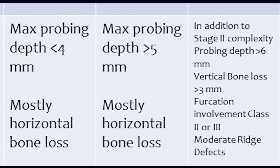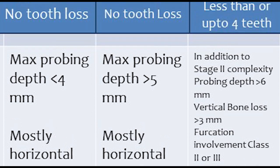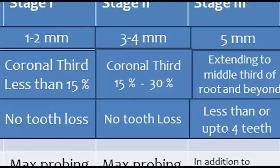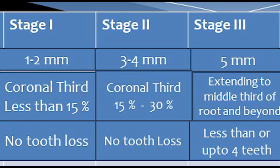To repeat Stage 2: 3 to 4 mm clinical attachment loss, coronal one-third RBL 15 to 30%, no tooth loss, maximum probing depth greater than 5 mm, and mostly horizontal bone loss. This is Stage 2.